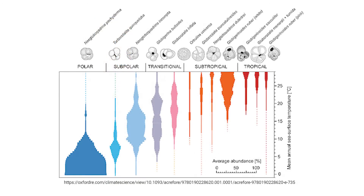Different species of foraminifera also prefer different environments. Thus, the species we find in a sediment sample gives paleontologists the ability to reconstruct changes in oceanic conditions through time.